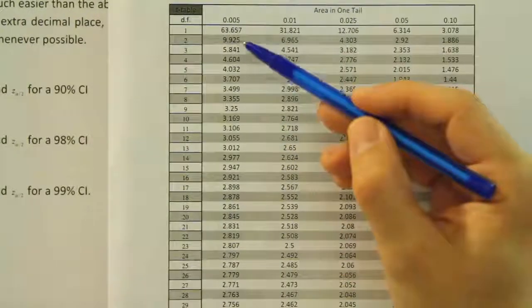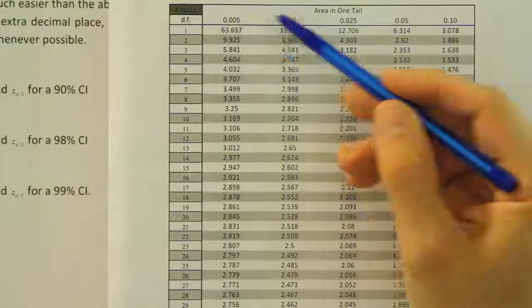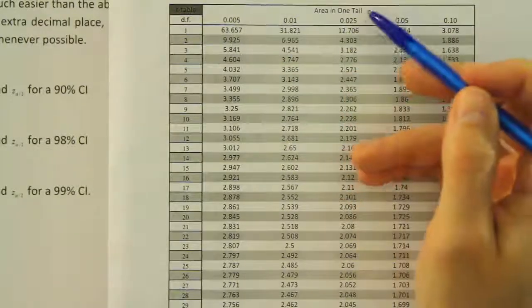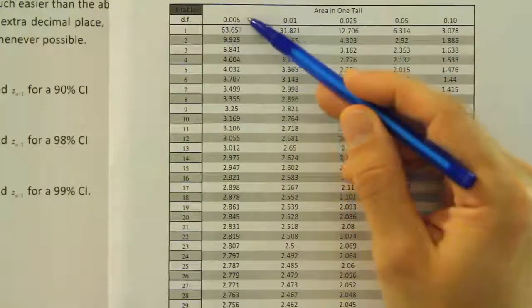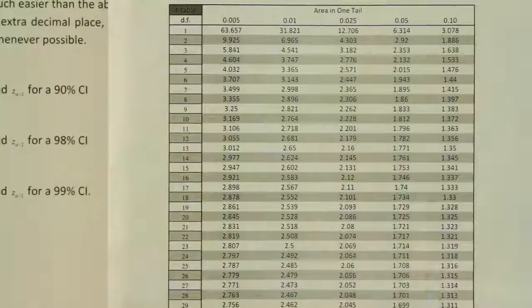Okay, so this time we're looking up the alpha divided by 2 value of 0.005. So we find that in the first column of our t-table. So in one tail, 0.005, we're going to go straight to the bottom of this column in order to find the critical z value.